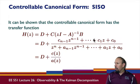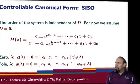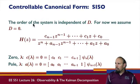So I'm going to call this polynomial c(z), this polynomial down here a(z). The order of the system is independent of D. For now we're going to assume D is equal to zero—we'll come back and see what happens when D is not zero. So I have this polynomial c(z) over a(z).